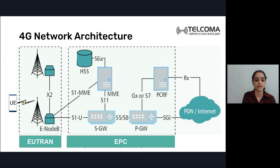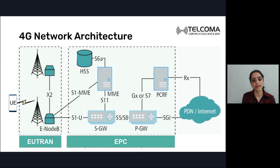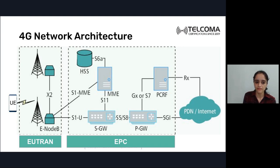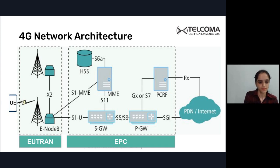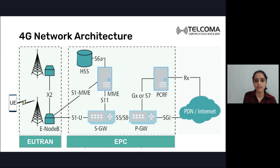The evolved packet core is all-IP based and is a new core — not a reuse of 3G or 2G core. It contains: MME (mobility management entity), SGW (serving gateway), PGW (PDN gateway), PDN or internet (public data networks), PCRF (policy control radio function), and HSS (home subscriber subsystem). S1U connects to SGW, SGW connects to PGW via S5/S8 interface, and SGi is the interface between PGW and PDN.